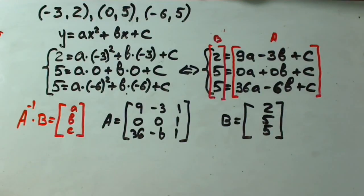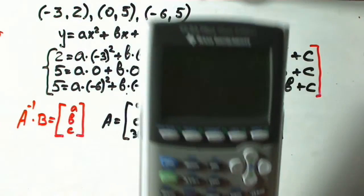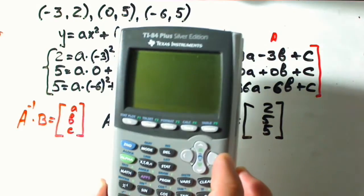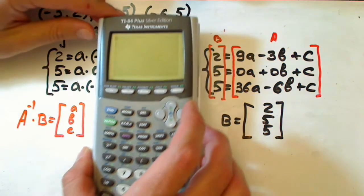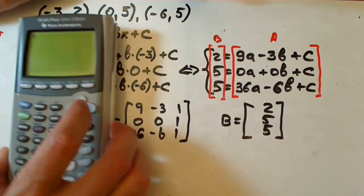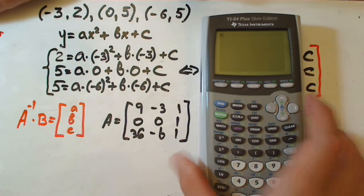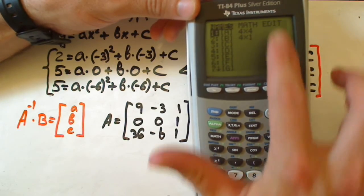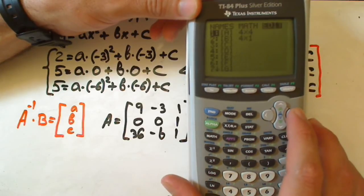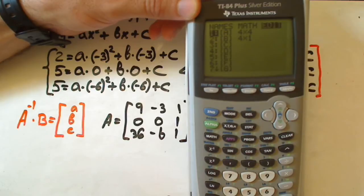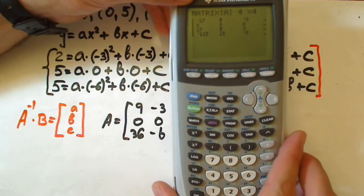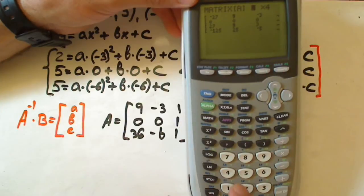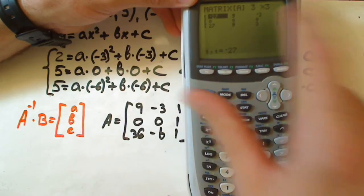Now we're going to find inverse of a. How to find it? Just using calculator. Think of the matrix a. We go to second, matrix, second matrix, go to edit using arrows, choose matrix a, it's already there, enter. Our matrix is three by three, three columns, three by three, three enter, three enter.